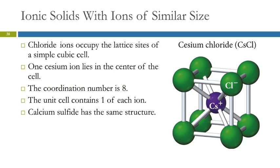These structures fall under the same titles — simple cubic, face-centered cubic, body-centered cubic, and hexagonal closest packed — but with modifications. This is the simple cubic unit cell; the difference is that now we have another ion fitting into the holes between the lattice points. The cesium ion in the middle is not considered one of the lattice points — just the chloride ions are.